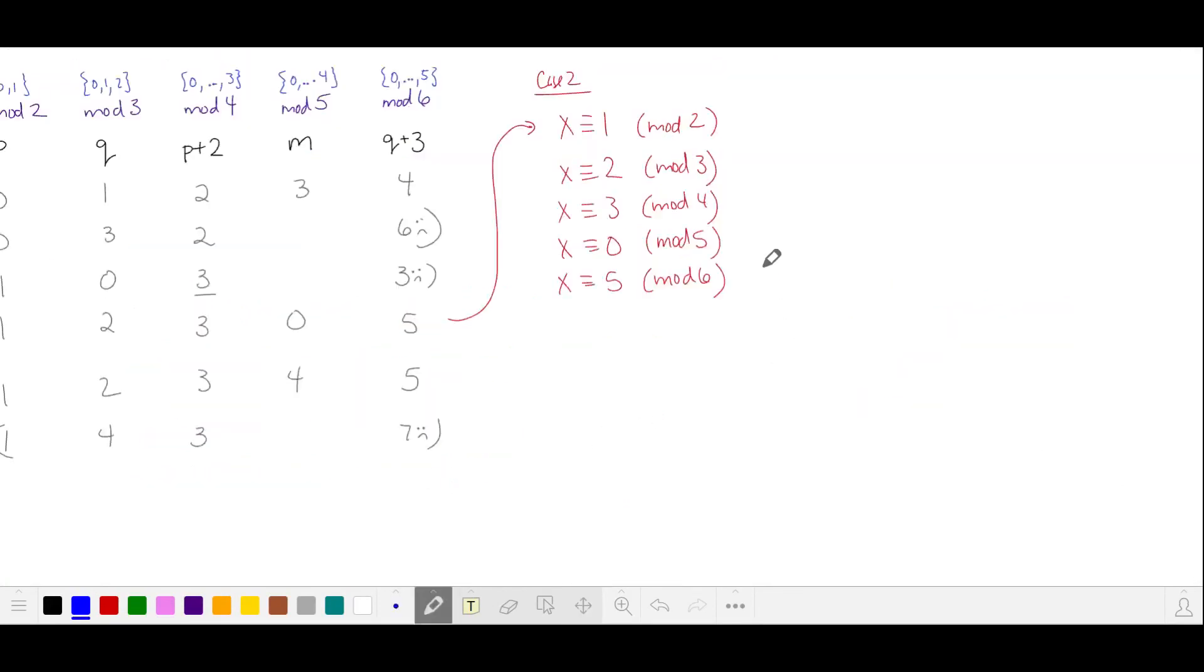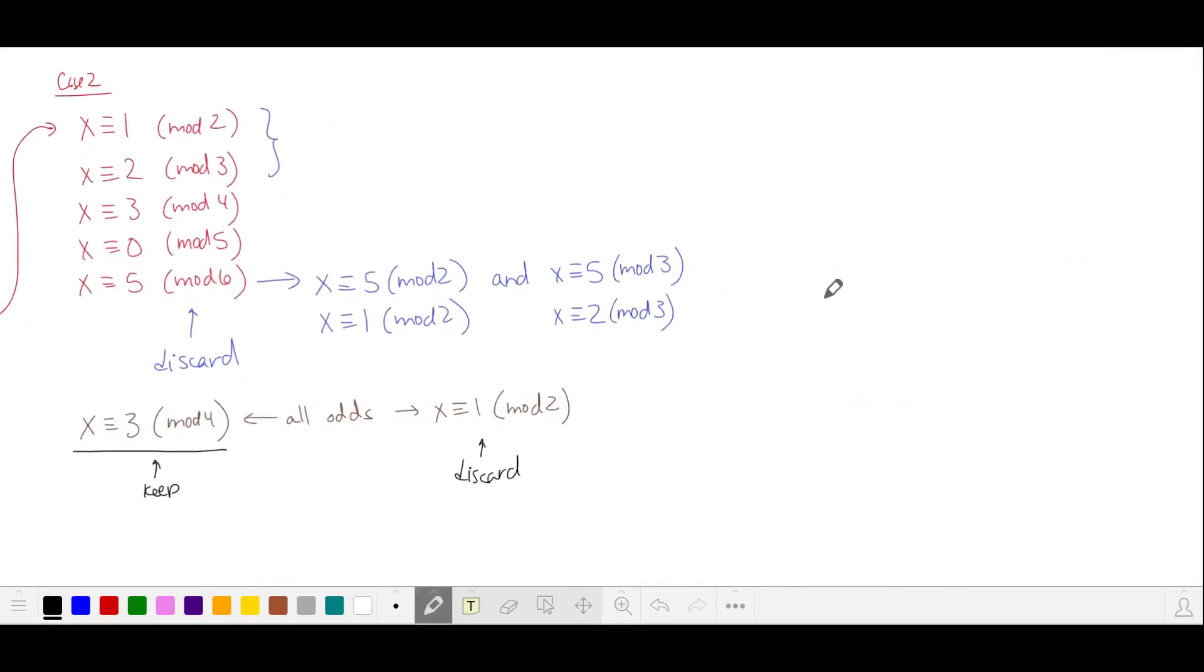Let's look at case two. Since not all of our mods are co-prime, we look for any equivalences that are redundant. Let's start with this mod six. If x is equivalent to five in mod six, it's equivalent to five in mod two and mod three. This simplifies to one and two in mods two and three, which is redundant with our first two equivalences. So we can discard this. Let's take a closer look at x is equivalent to three in mod four. All of these numbers are odd, which is also what we have in our first equivalence. But since this is the tightest restriction, we'll keep this and discard the extra restriction that it be odd. Our remaining equivalences are now co-prime so we can solve.